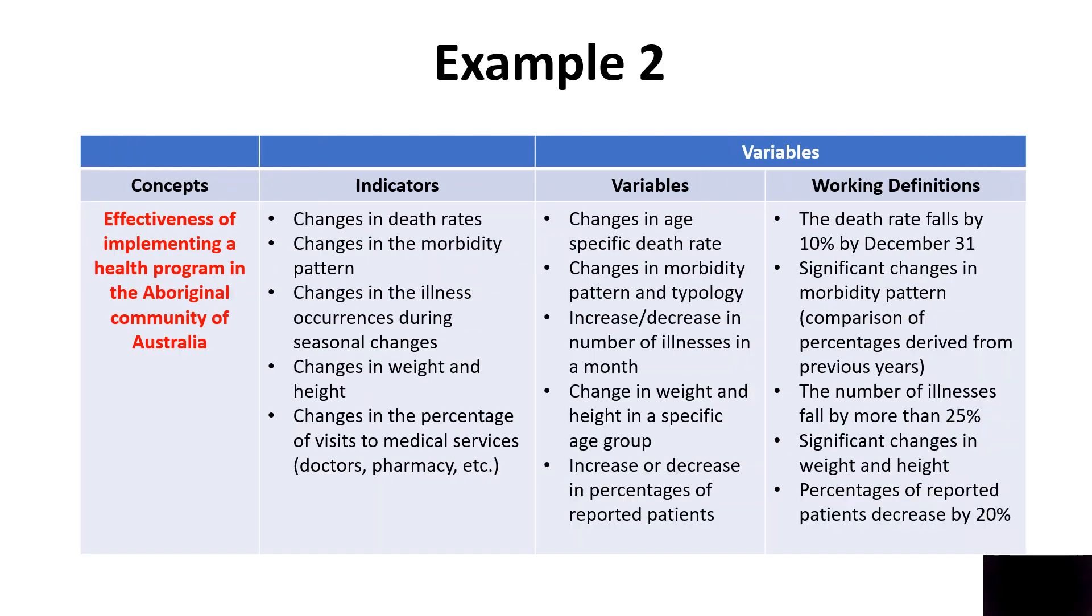Let's take the second example. In this example, the concept I'm trying to investigate is the effectiveness of implementing a health program in the Aboriginal community of Australia. These are the natives of Australia, the original traditional landowners of Australia. I have implemented a health program and I want to see how effective it is. Now, effectiveness for you may mean different and effectiveness for me may mean different. For us to have a common understanding of what we mean by effectiveness, I have to define it with certain indicators.